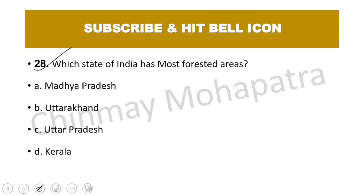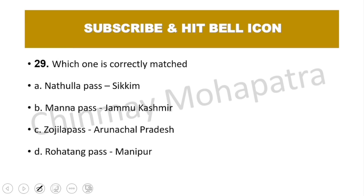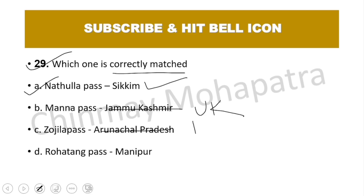Question number 28: Which state of India has the most forested area? The right answer is Madhya Pradesh. Question number 29: Which of the following passes is correctly matched? Nathula Pass is in Sikkim. Mana Pass is in Uttarakhand. Zoji La Pass is in Ladakh. Rohtang Pass is in Himachal Pradesh.